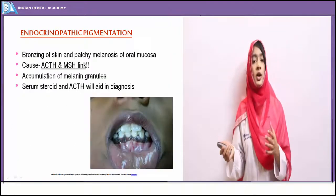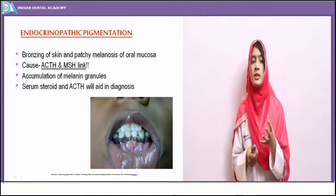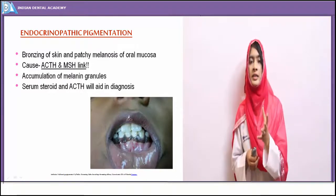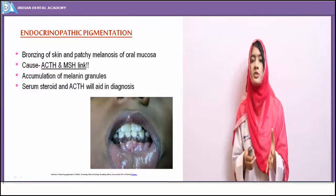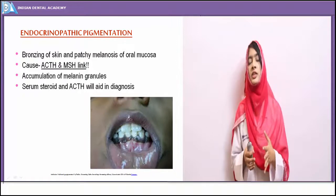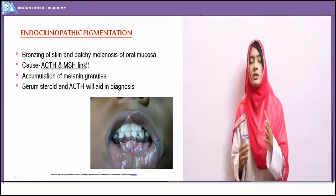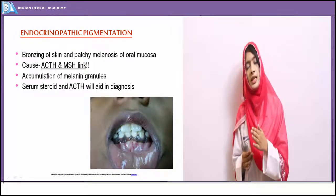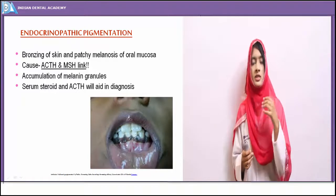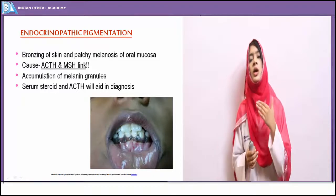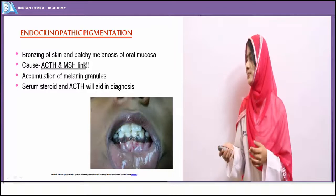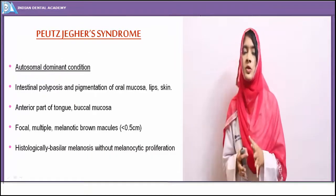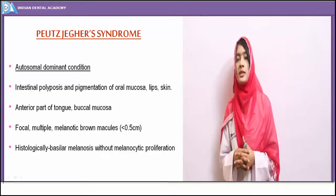For diagnosis of pigmentation, you must identify and relate to the specific cause. When the cause is known, the underlying pigmentation can be treated. In case of Addison's disease, if steroids are administered to the individual there will be relief of symptoms — steroid administration helps in the diagnosis of Addison's disease and identifying what cause is responsible for the pigmentation.